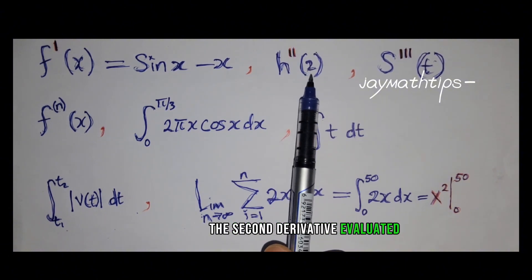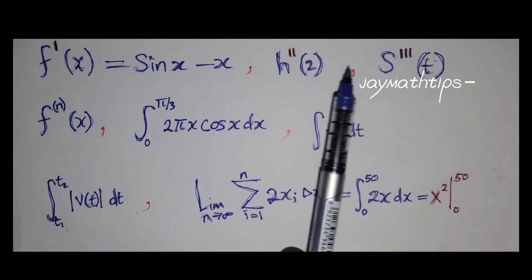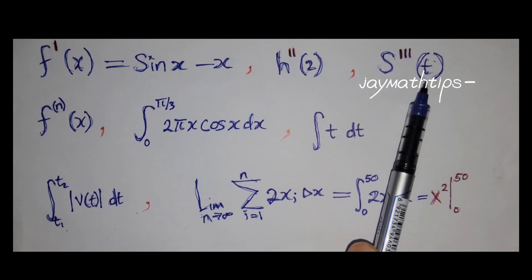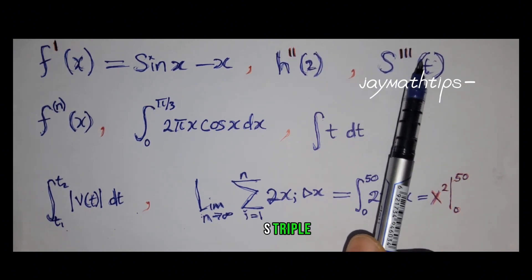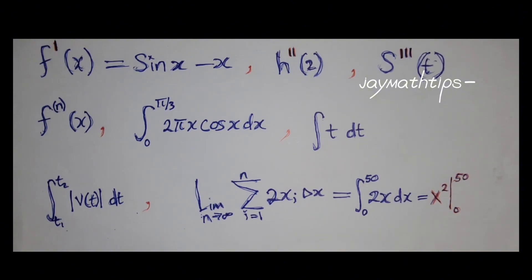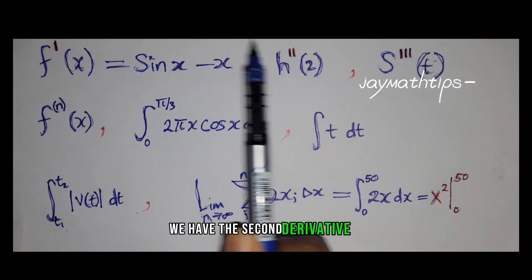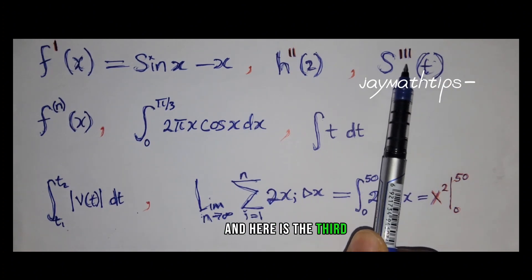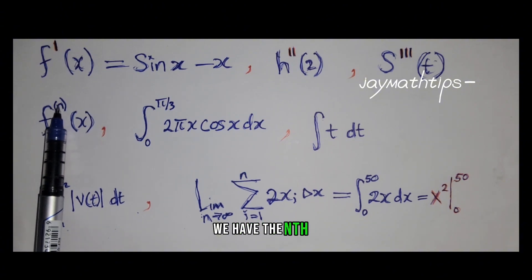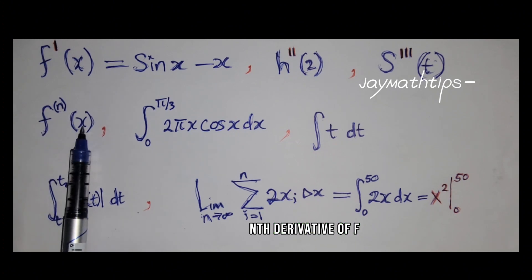We have here s triple prime of t. And what we have here is the third derivative. We have the second derivative, the first derivative, and here is the third derivative. Here we have the nth derivative of f of x.